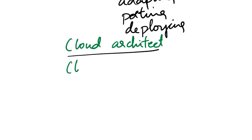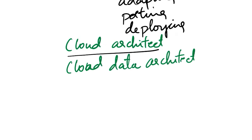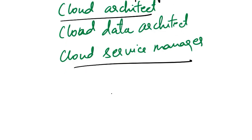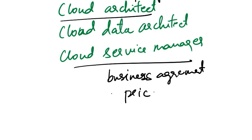Next role is cloud data architect. The cloud data architect designs and structures data-related components in a cloud environment, including considerations for data storage, processing management, SLA, and security in the context of cloud computing. Next role is cloud service manager. A cloud service manager is responsible for business agreements and pricing for the cloud customer.